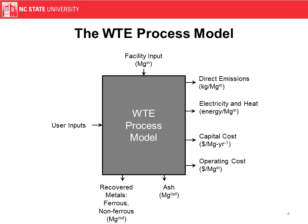Here's an overview of our process model. We see that there are user inputs as well as a mass input at the top. These two things combine to allow us to predict direct emissions, the electricity and heat generation, as well as capital and operating costs. We also calculate recovered metals and ash.